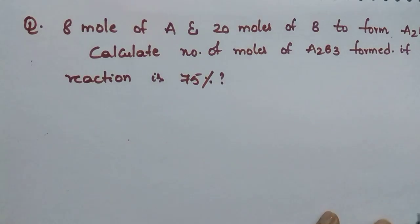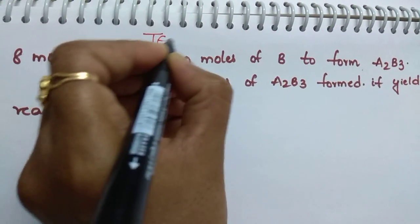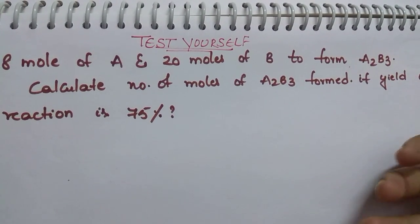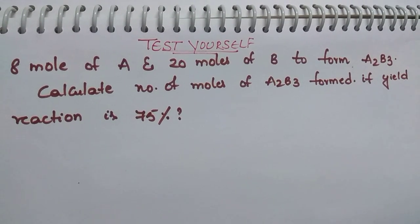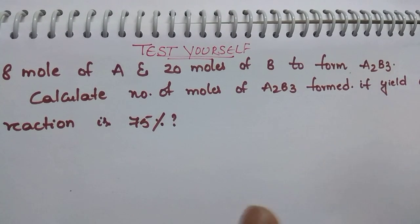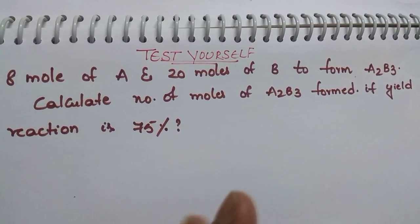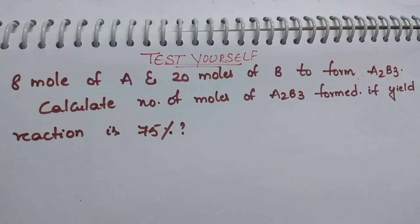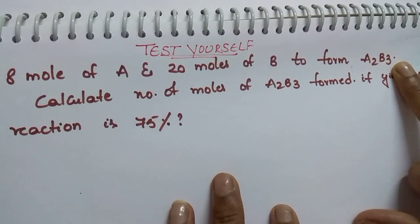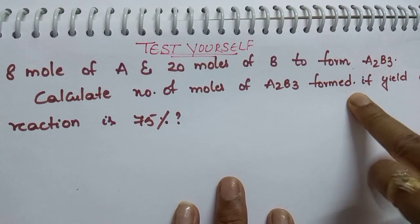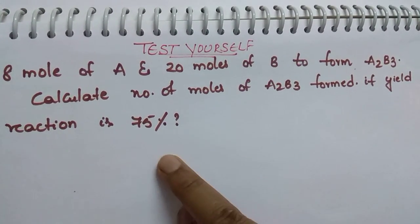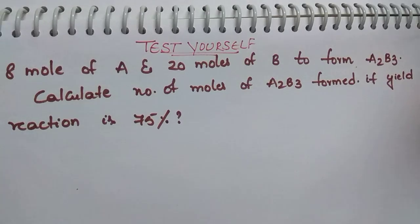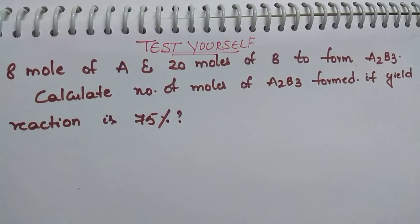Here is a test-yourself question — please try it, as practicing is very important. If you just listen and leave it you won't get command over the concept. The question: 8 moles of A and 20 moles of B react to form A₂B₃. The percentage yield is given — you have to calculate how many moles of A₂B₃ are formed. In the previous question the percent yield was not given and we calculated it; now it is given and you must find the moles.